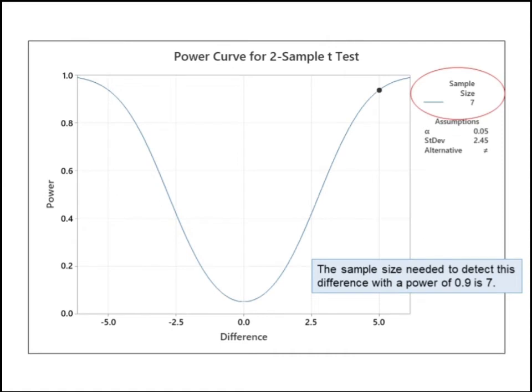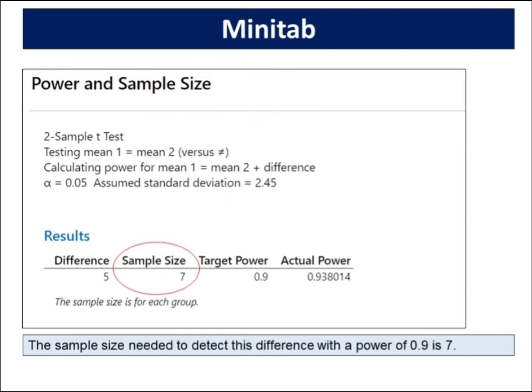Use the power curve to assess the appropriate sample size or power for your test. In summary, the sample size needed to detect this difference with a power of 0.9 is 7.